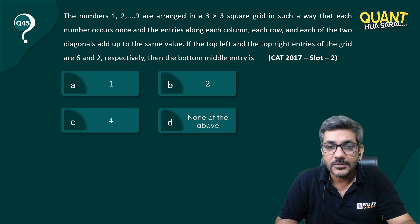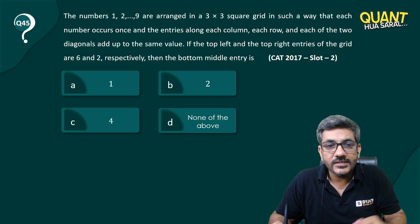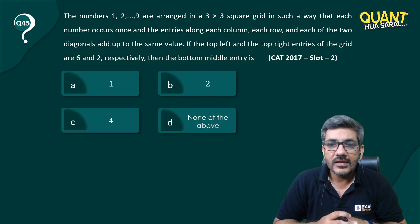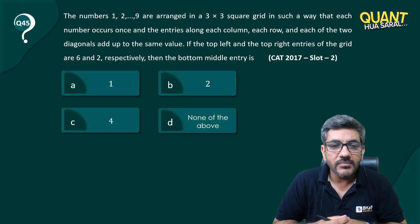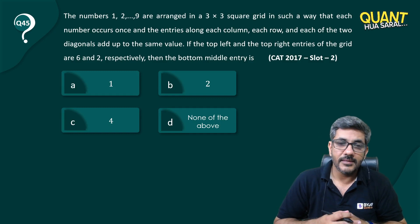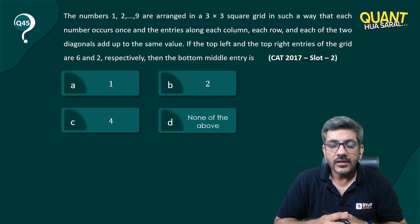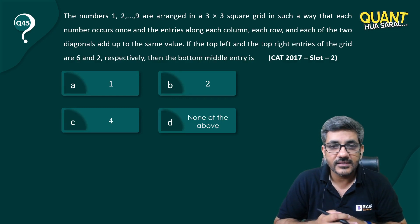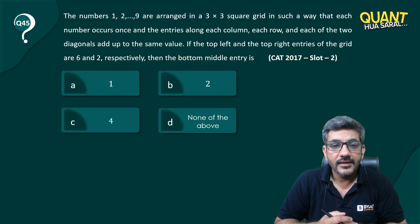So let's start with the first question here. The numbers 1, 2, 3, 4 up to 9 are arranged in a 3 by 3 square grid in such a way that each number occurs once and the entries along each column, each row and each of the two diagonals they add up to the same value. If the top left and top right entries of the grid are 6 and 2 respectively then the bottom middle entry is which one?